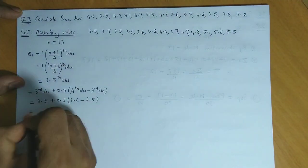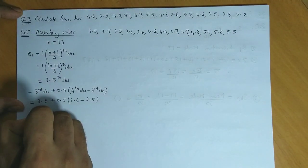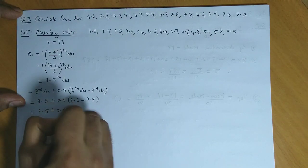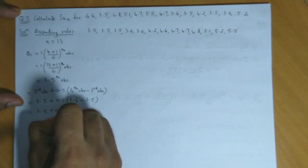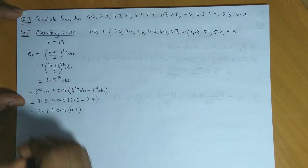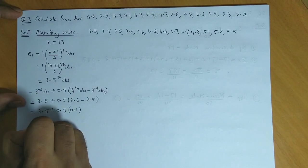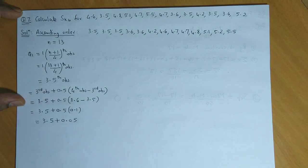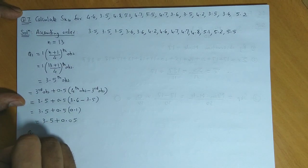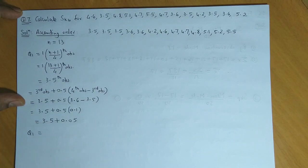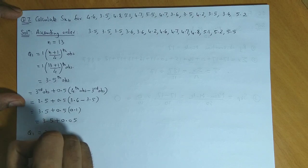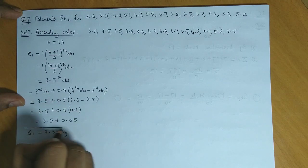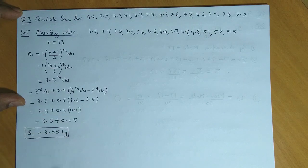So this is 3.5 plus 0.5 into 4th observation. 4th observation is 3.6 minus the 3rd observation which is 3.5. So we get 3.5 plus 0.5 into the difference of 0.1. So this becomes 3.5 plus 0.05. And if we add this, Q1 value is 3.55 kilograms. So this is the value for Q1.